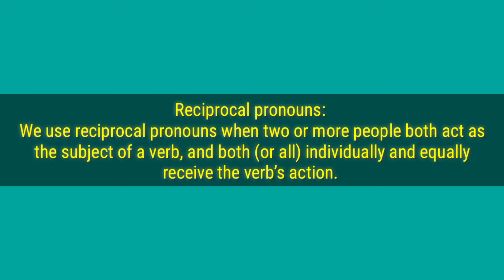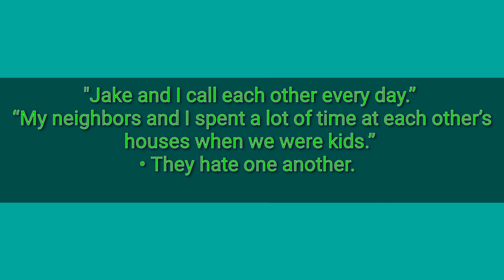Reciprocal pronouns. We use reciprocal pronouns when two or more people both act as the subject of a verb and both or all individually and equally receive the verb's action. They can be the object of either the verb itself or a preposition used to complete the verb's meaning. There are two reciprocal pronouns: 'each other,' traditionally used for two people, and 'one another,' traditionally used for more than two people. For example: 'Jake and I call each other every day.' 'My neighbors and I spent a lot of time at each other's houses when we were kids.'